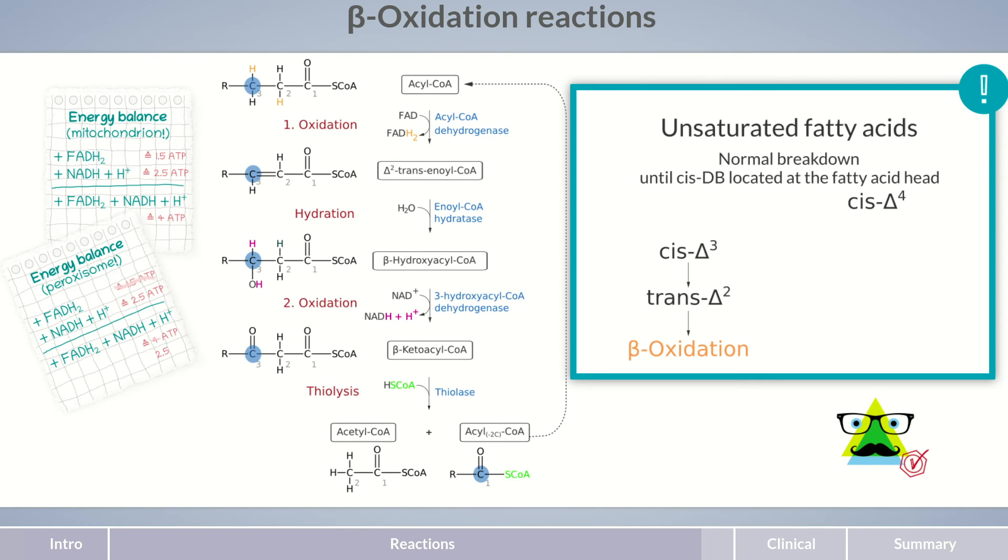For a cis double bond in the delta-4 position, an additional trans-double bond in the delta-2 position is inserted and the resulting dienoyl is converted into an acid with a single trans-double bond in the delta-3 position. Through isomerization, this intermediate can be converted into a trans-double bond in the delta-2 position so that the fatty acid can be further degraded by beta-oxidation.